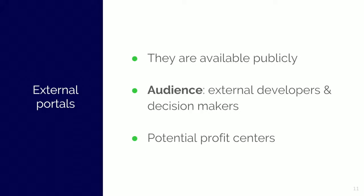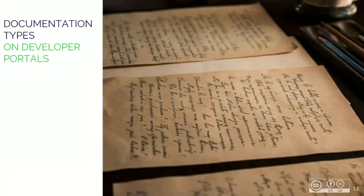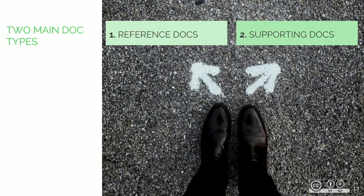So what kind of content can be on a developer portal? Basically, there are two types of documentation on the portal: reference docs and supporting docs.